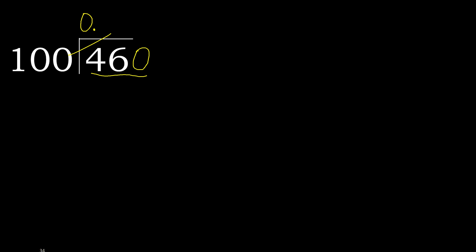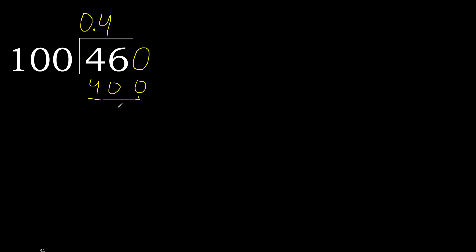100 multiplied by 5 is 500, which is greater. 100 multiplied by 4 is 400, which is not greater. Okay, subtract. Next, there is no number, therefore complete — always complete with zero.